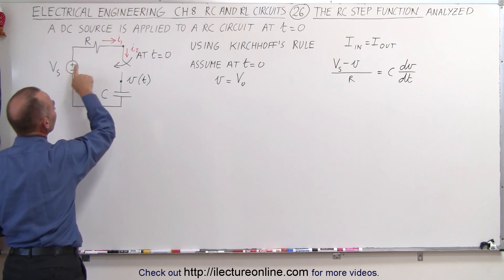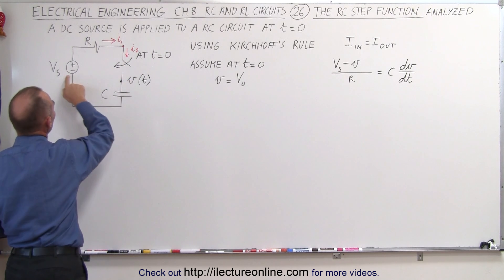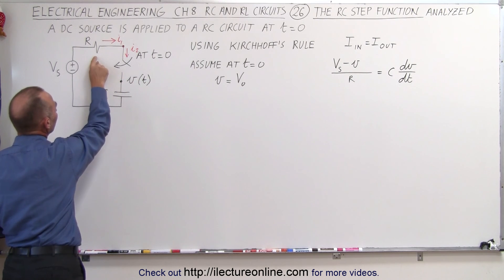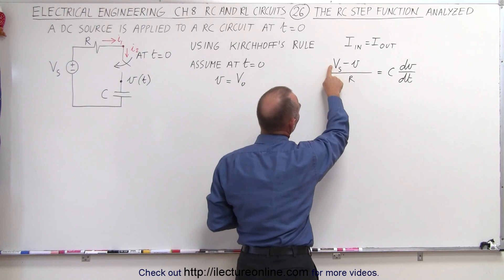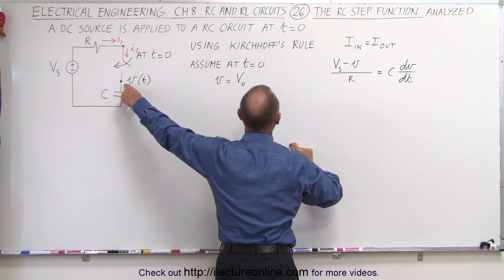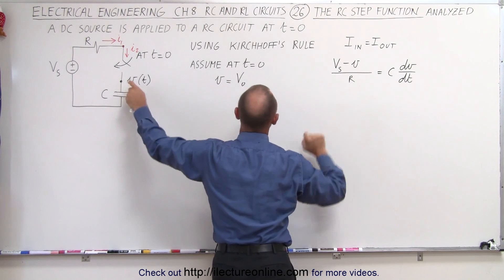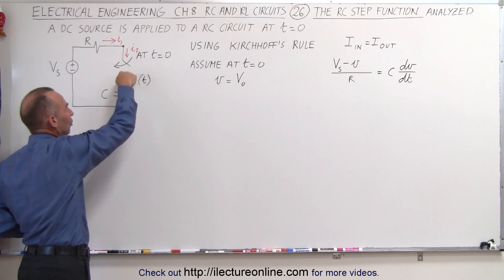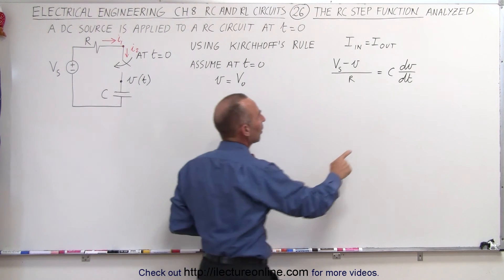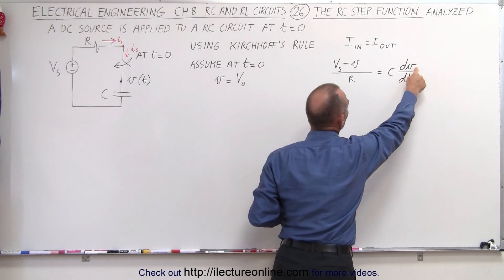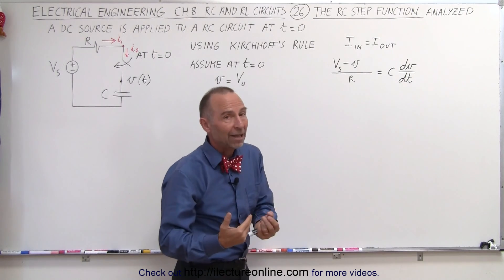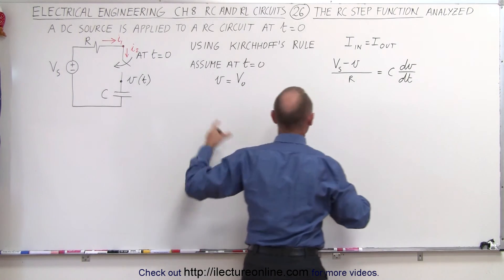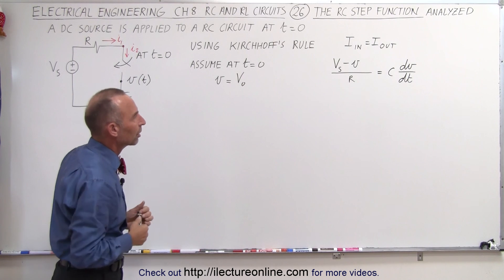If the voltage here is greater than the voltage over here, then after the switch closes we assume that V_S will be greater than the voltage as a function of time. We take that difference divided by the resistance, which is current I1. So the current into that point is V_S minus V(t) divided by R. The current leaving that point equals the current entering the capacitor, which is determined by the capacitance times the change in voltage with respect to time. The greater the capacitance, the faster current can flow into it, and the faster the voltage is changing, the faster the current must be flowing. So it's simply the product of those two.